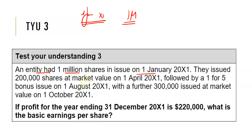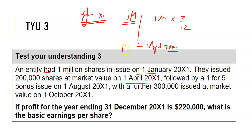They issued 200,000 shares on the 1st of April, so there's a market share issue three months into the year. So I'm going to weight: 1 million times 3 over 12. Then when I get to April, I add the additional 200,000 shares onto my current 1 million and carry on. There's also a bonus issue from the 1st of August. Bonus shares are deemed to happen right from the beginning.